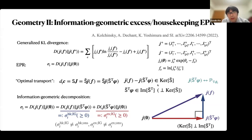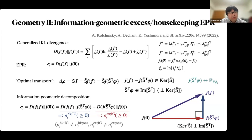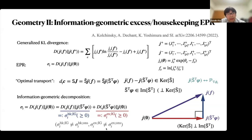We consider the flow j given by the gradient of a potential. If we consider the orthogonality of the two spaces — the kernel of S-tilde and the image of S-tilde-transpose — we can obtain a generalization of the Pythagorean theorem. The entropy production rate is decomposed into two non-negative parts: one can be the housekeeping entropy production rate and the other the excess entropy production rate. The two generalizations of the excess and housekeeping entropy production rates are not equivalent.